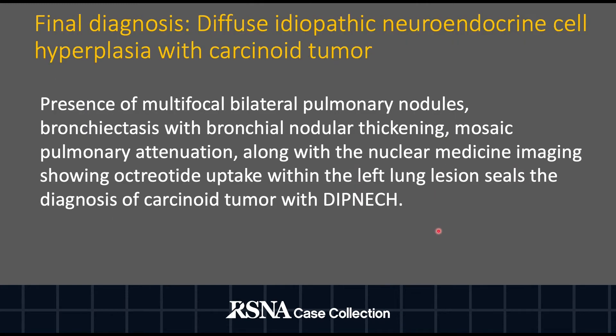The final diagnosis in this case is diffuse idiopathic neuroendocrine cell hyperplasia with carcinoid tumour. In terms of imaging findings, this usually presents with multifocal bilateral pulmonary nodules, bronchiectasis with bronchial nodular thickening, and mosaic pulmonary attenuation. In this case, the nuclear medicine imaging showing octreotide uptake within the left lung lesion seals the diagnosis of carcinoid tumour with DIPNECH.